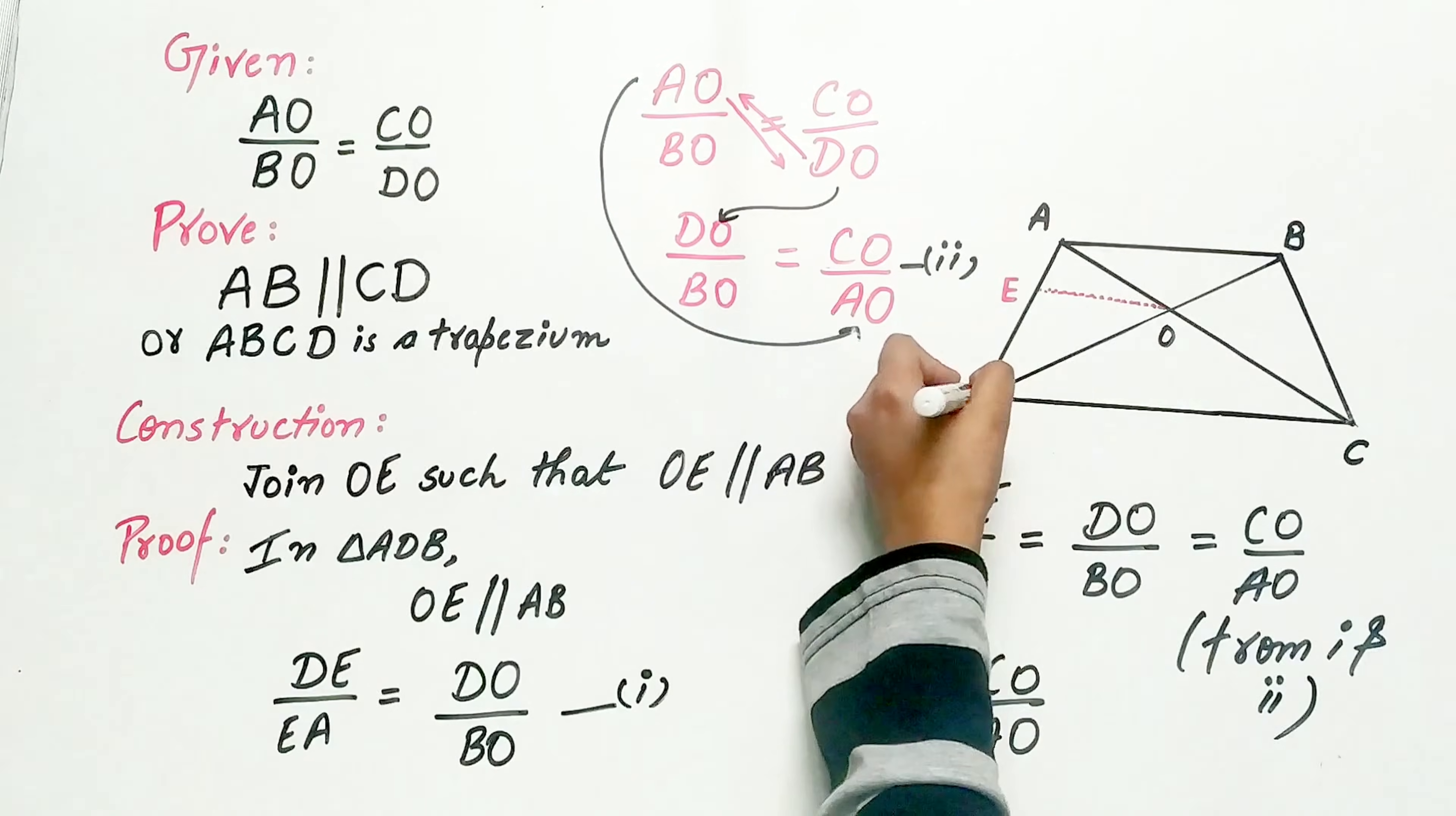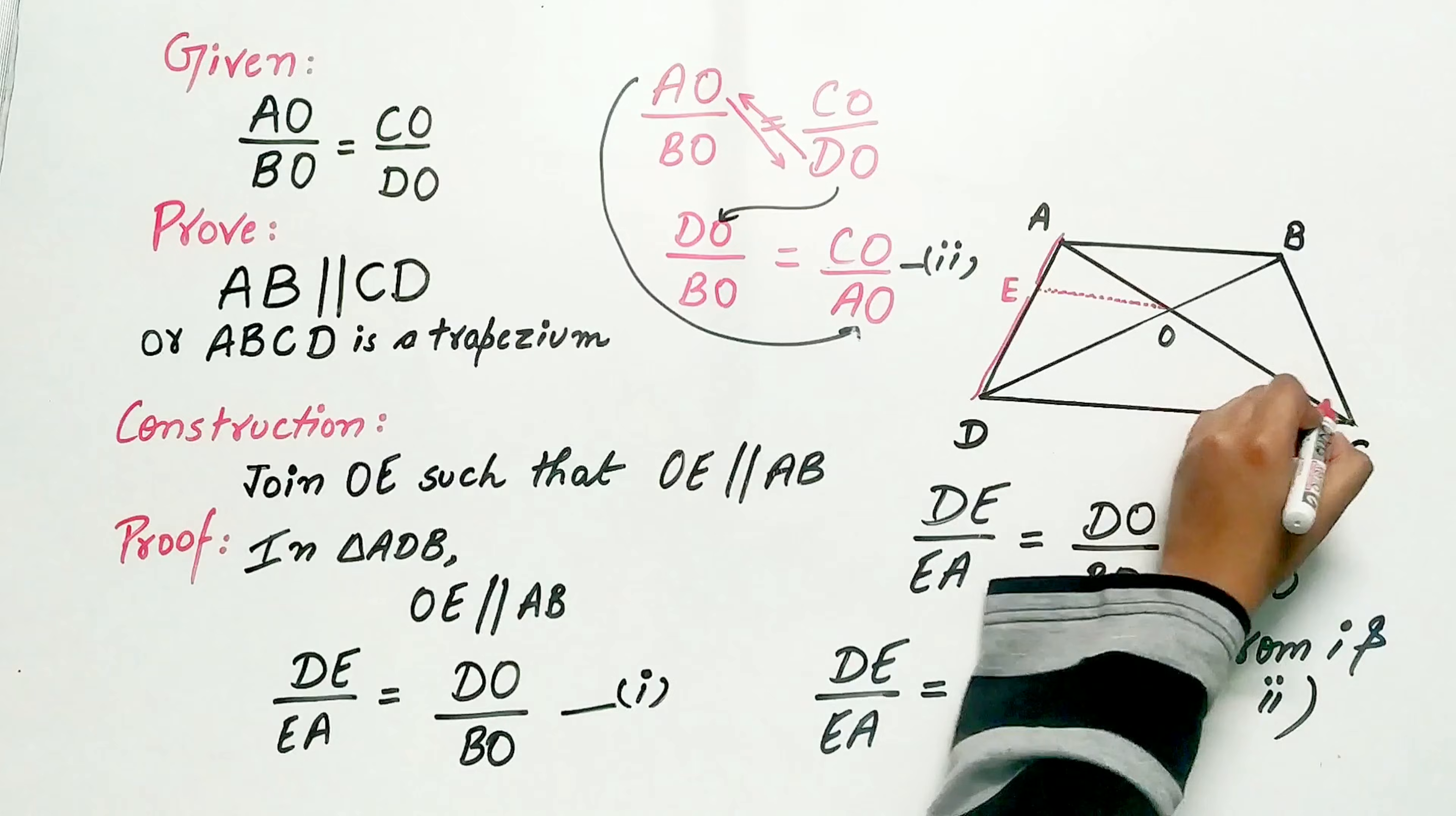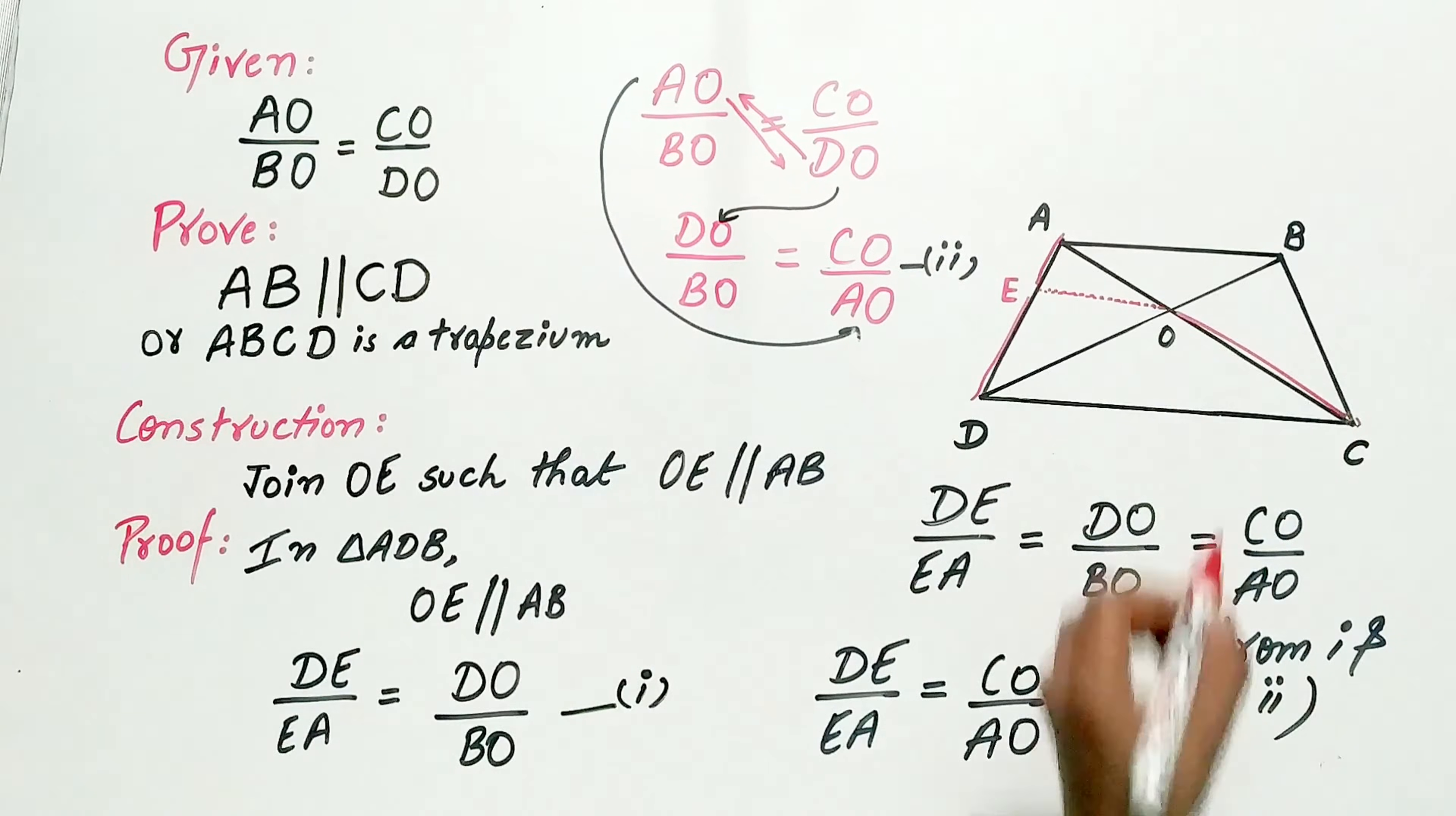Now look carefully. DE by EA is equal to CO by AO.